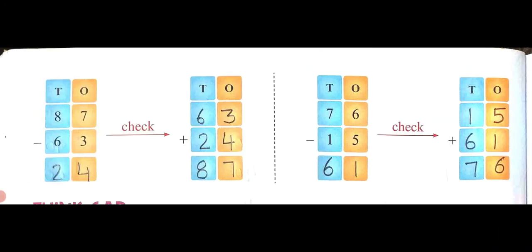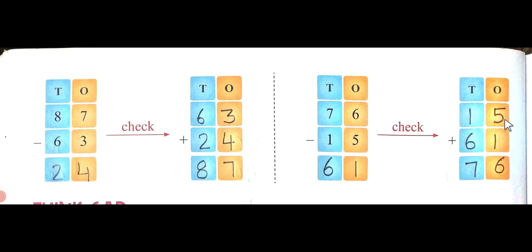Let's see page number 42. 87 minus 63: 7 minus 3 is 4, 8 minus 6 is 2, answer is 24. To check, write 63 above and 24 below: 3 plus 4 is 7, 6 plus 2 is 8 — we get 87. The answer is correct. Now 76 minus 15: 6 minus 5 is 1, 7 minus 1 is 6, answer is 61. Write 15 and 61 to check: 5 plus 1 is 6, 1 plus 6 is 7 — we get 76. The answer is correct.